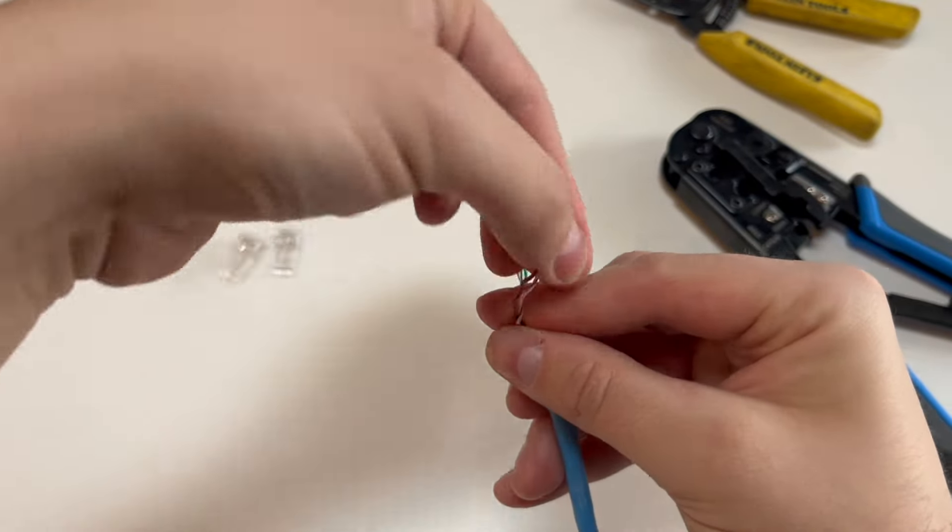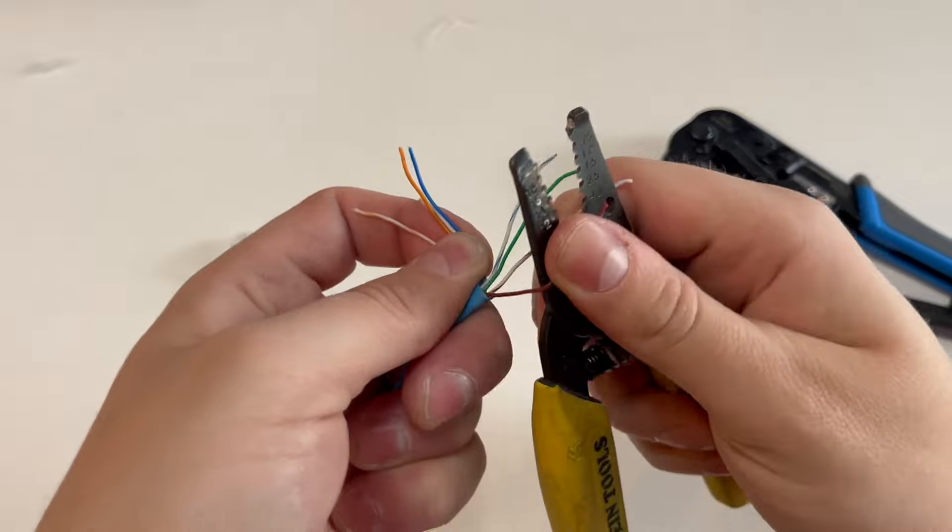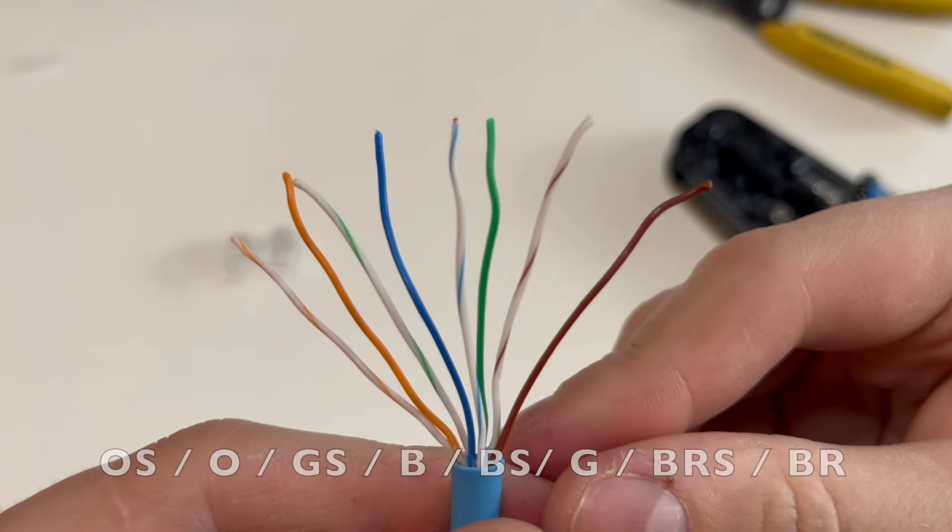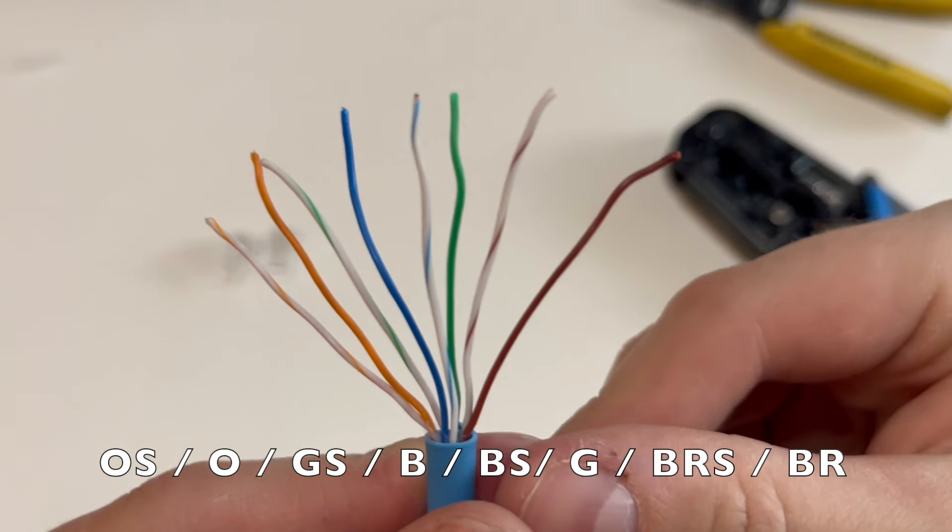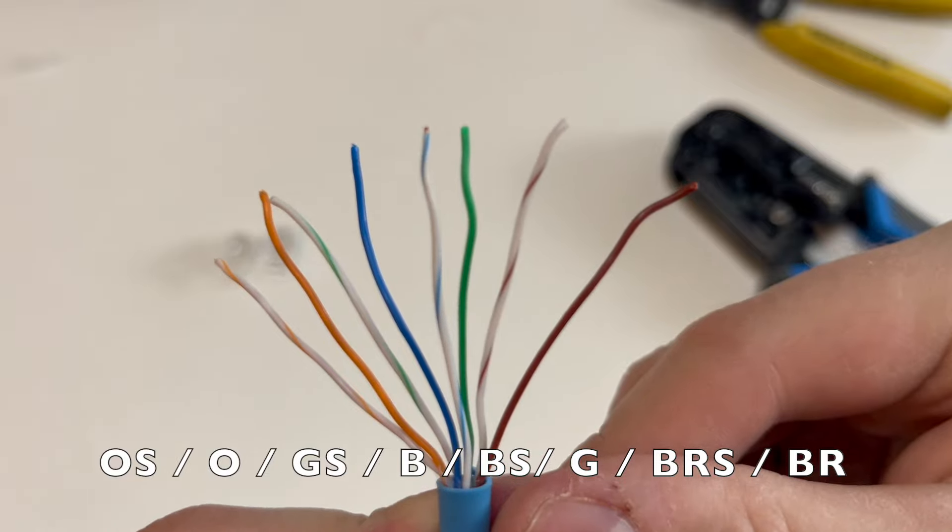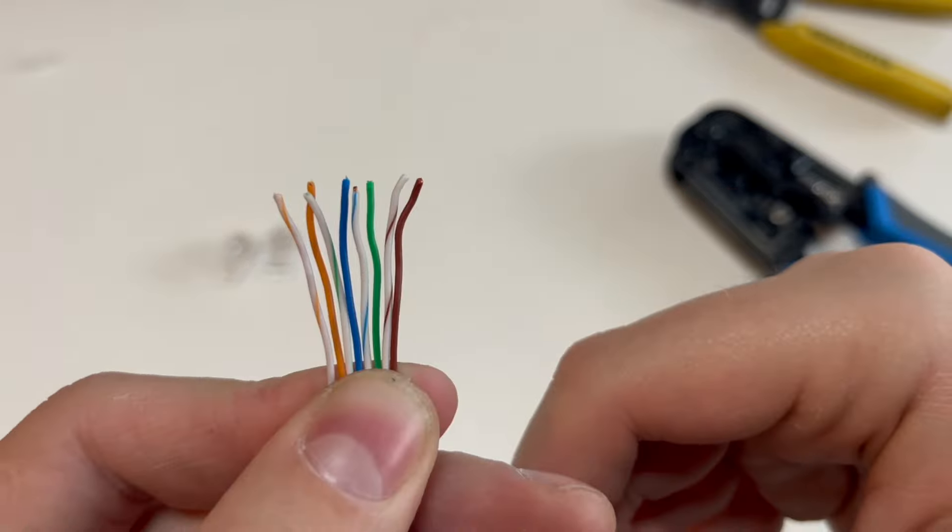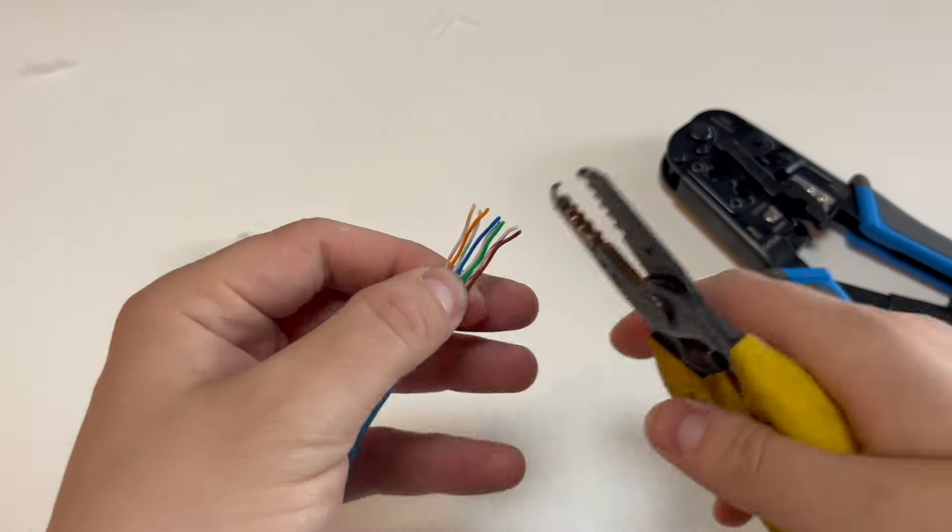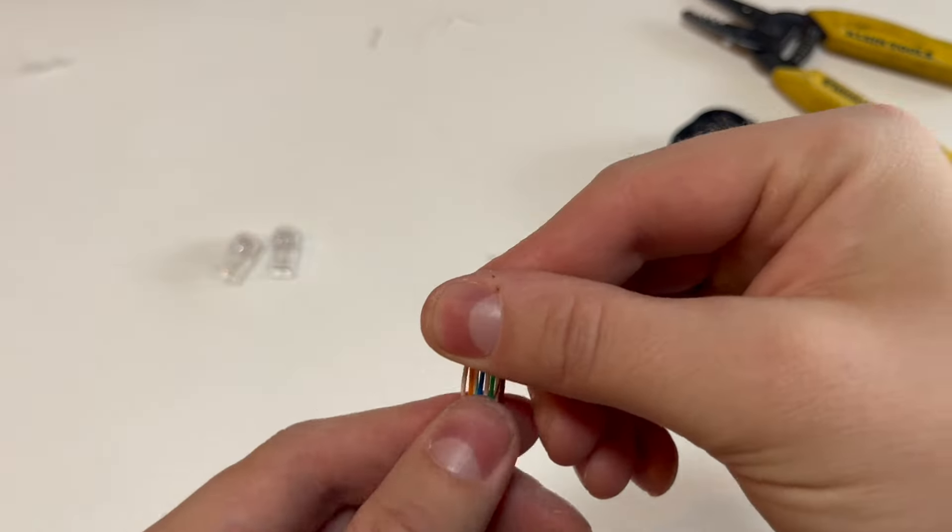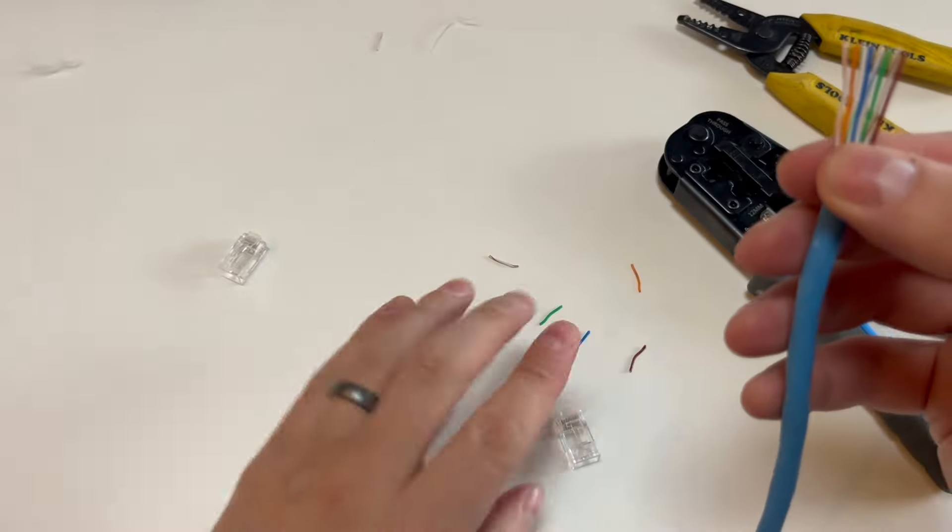You'll then need to untwist and straighten each of the 8 wires before arranging them in the proper order. From left to right, start with the orange stripe, then orange, green stripe, then blue, blue stripe, then green, brown stripe, and then brown. Once in order, press the wires closer together and use your wire strippers to cut off a clean end, leaving about an inch to push through the connector.